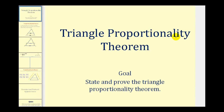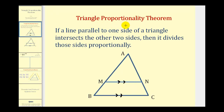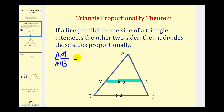Welcome to a lesson on the Triangle Proportionality Theorem. The goal of this video is to state and prove this theorem. The Triangle Proportionality Theorem states that if a line parallel to one side of a triangle intersects the other two sides, then it divides those sides proportionally — so that the length of AM to the length of MB equals the length of AN to the length of NC.